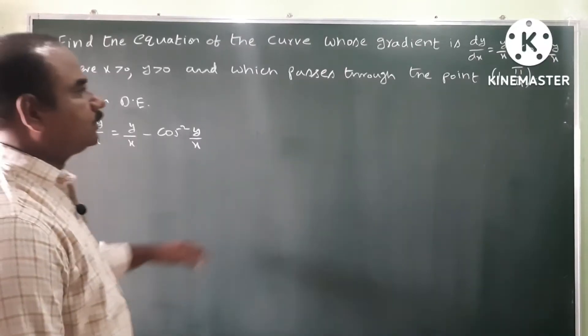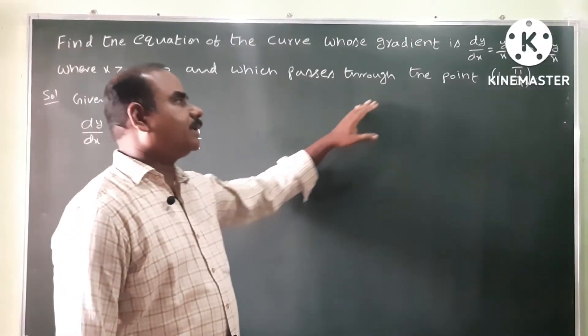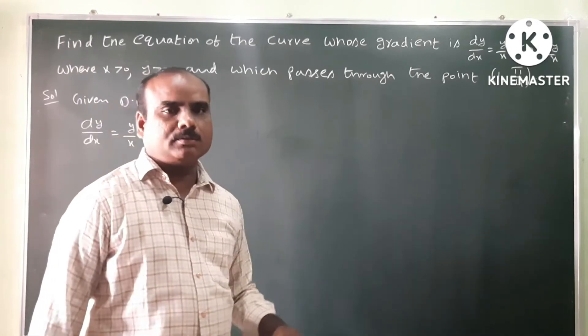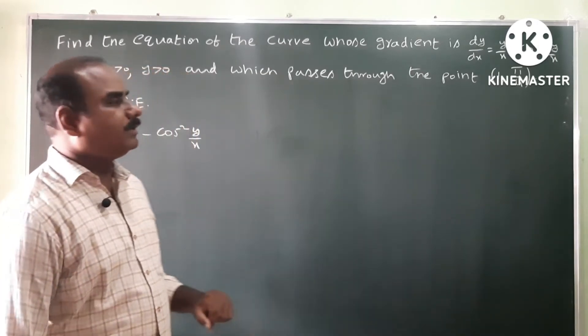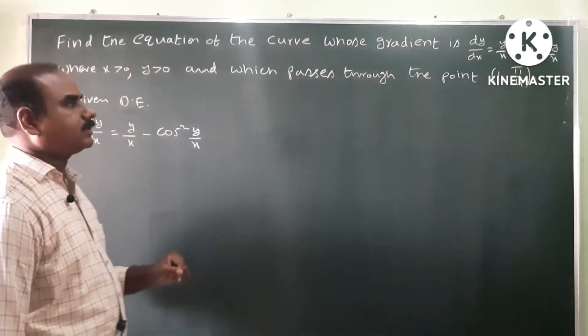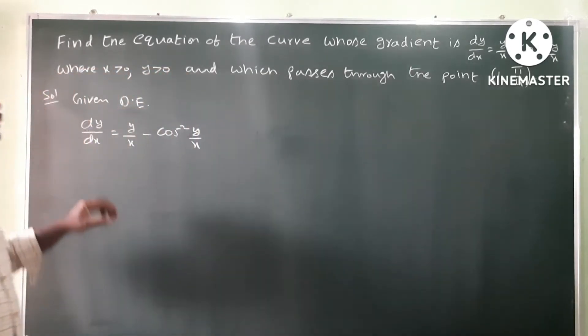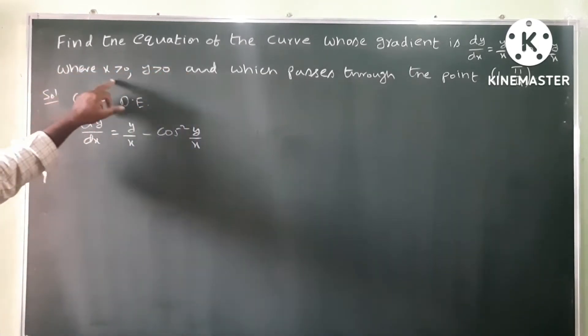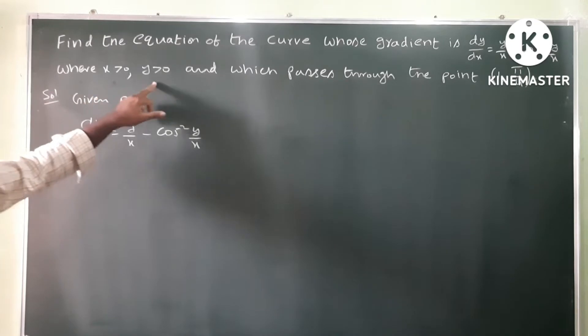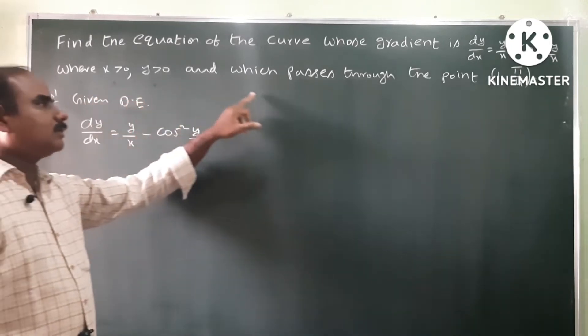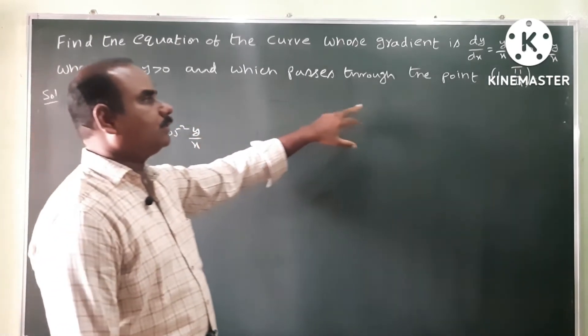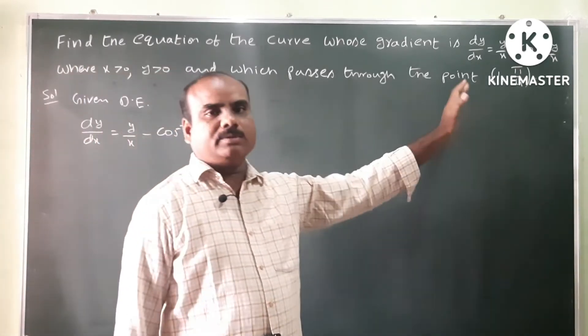Find the equation of the curve whose gradient dy by dx is equal to y by x minus cos squared y by x, where x greater than 0, y greater than 0, and which passes through the point (1, π/4).